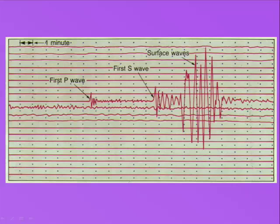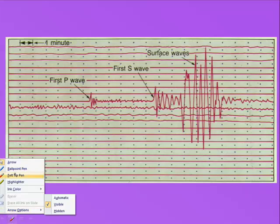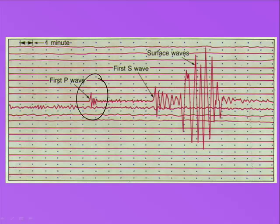Another look at a seismogram reveals the P wave arriving first. After a lapse of time, the S wave arrives, and then finally the surface waves.